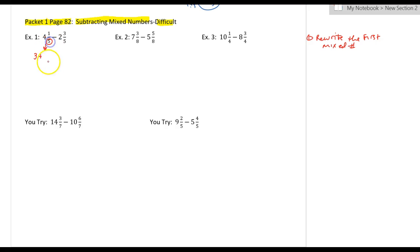But when I write one, I'm going to write it as five over five. Now, I still have to add the one-fifth there. So this becomes, when I rewrite that mixed number, becomes three and five plus one is six over five.